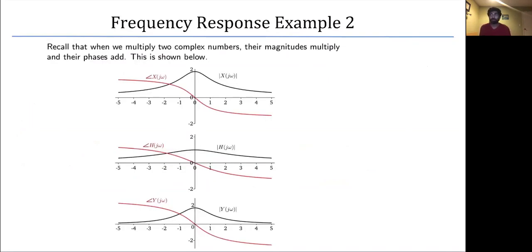Remember that when we multiply two complex numbers, their magnitudes multiply and their phases add. These plots show the multiplications for both the complex exponentials, the transfer functions, and the output for this particular example.